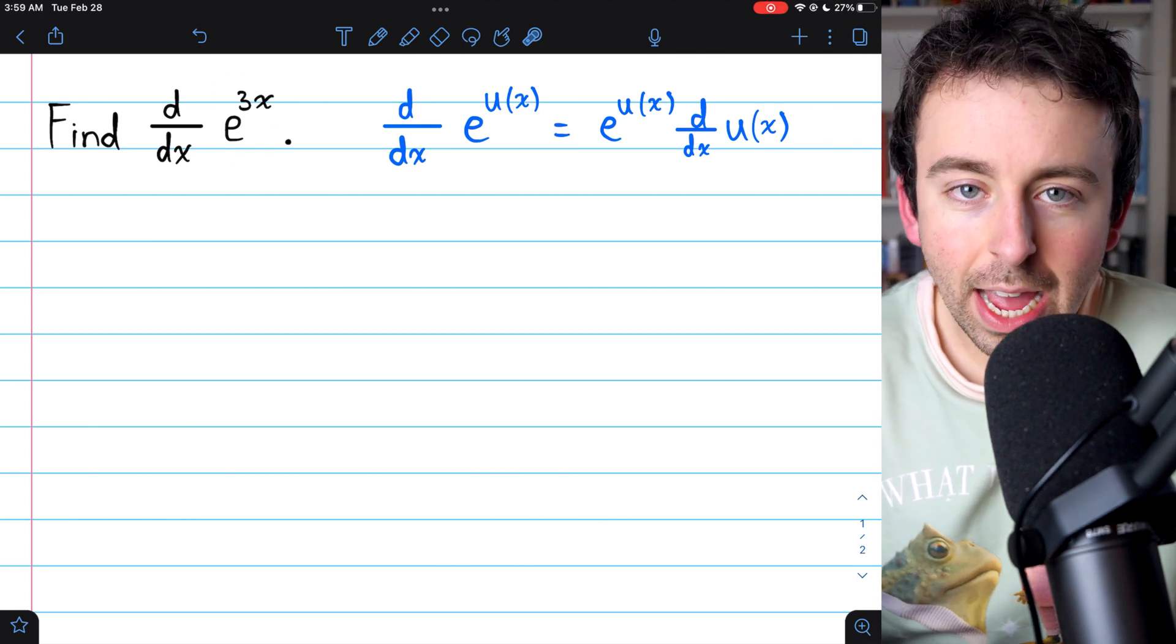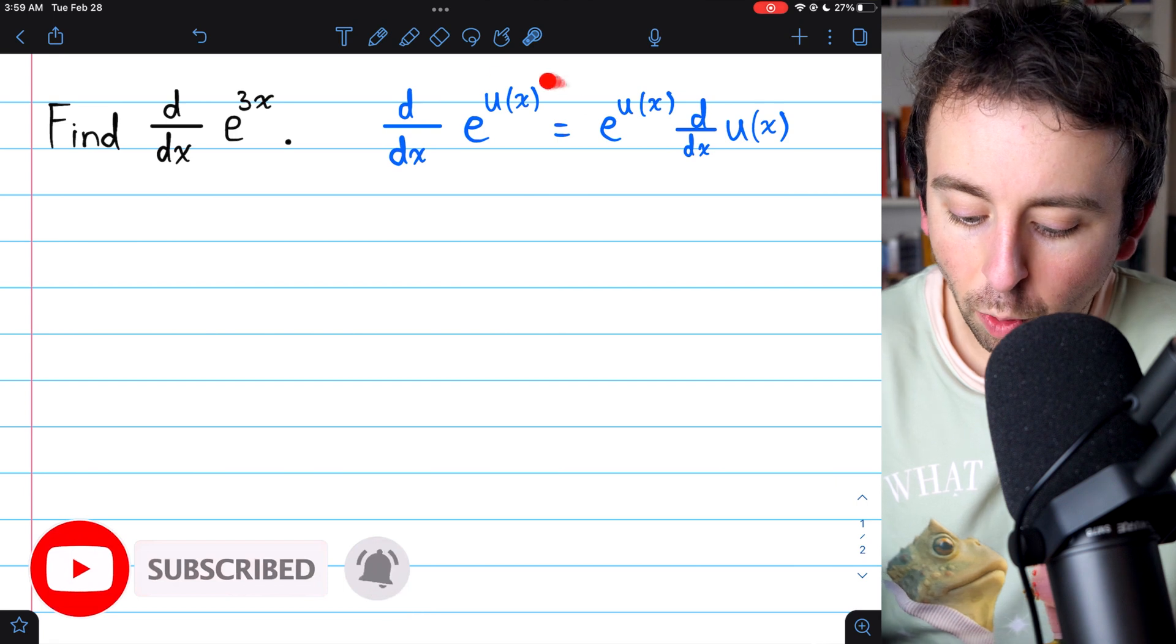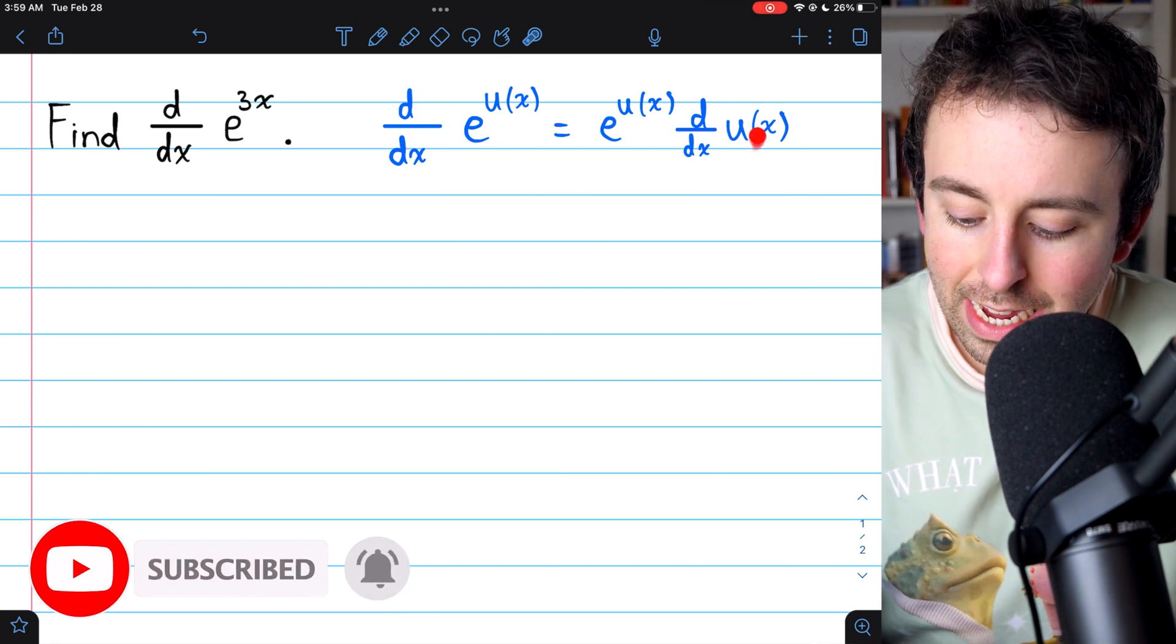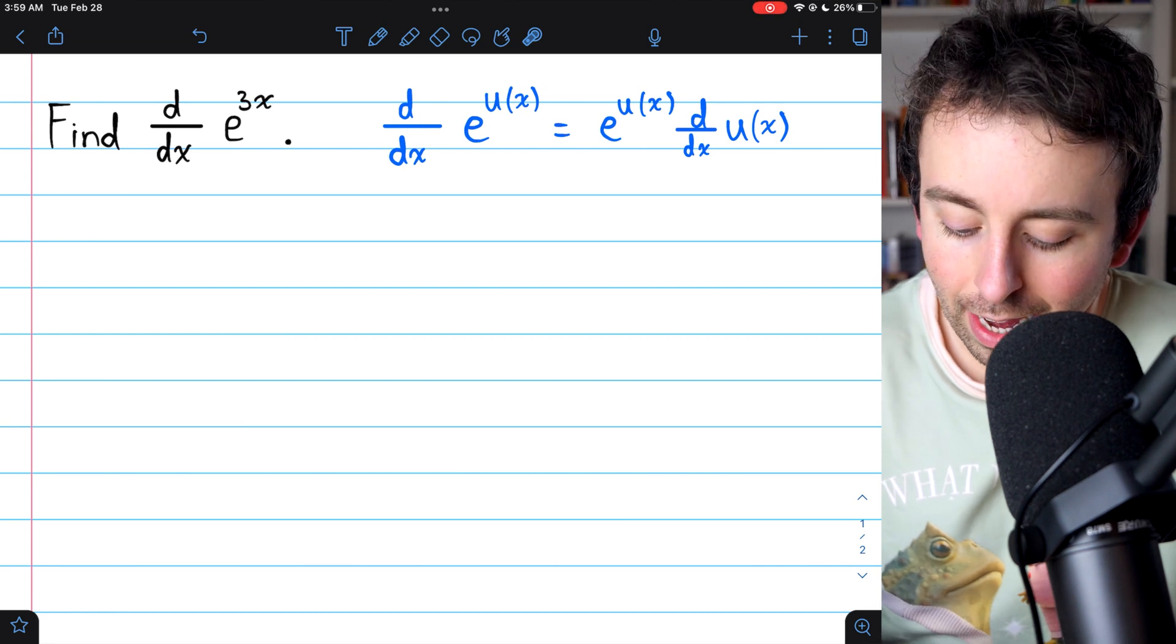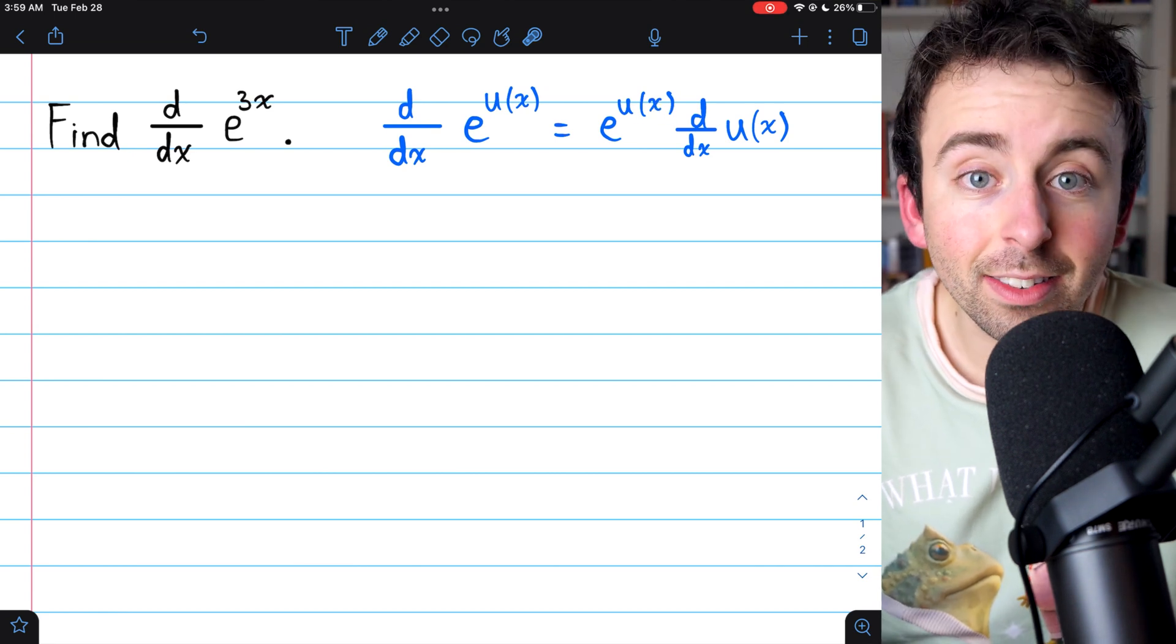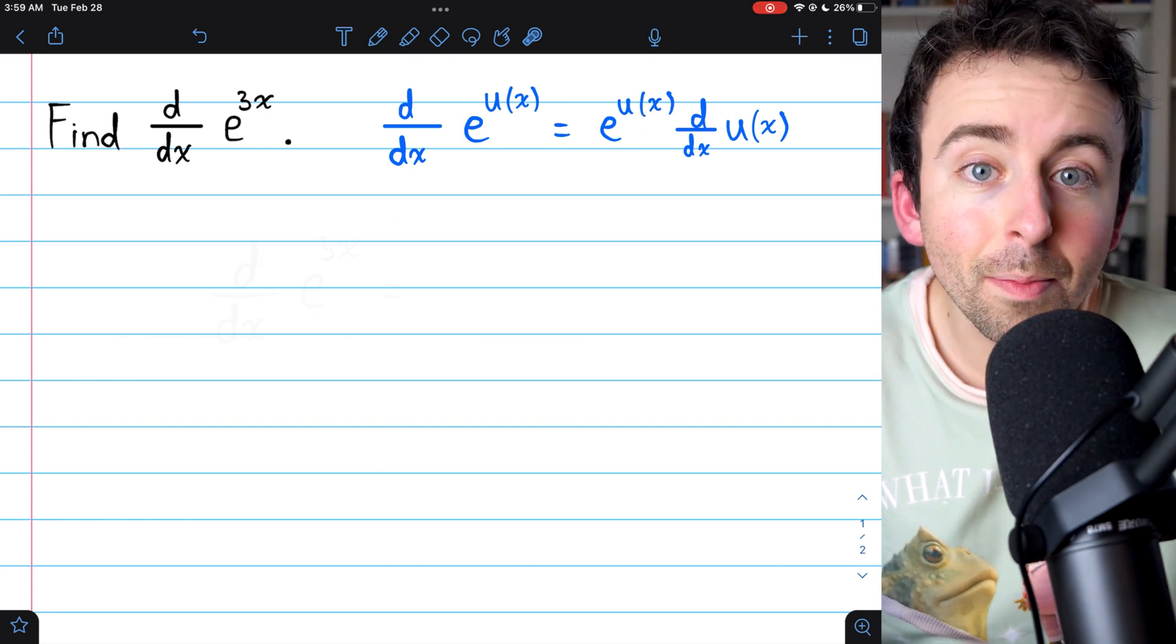To find the derivative of e to the 3x, we simply need to use the chain rule. I've written the general formula for the derivative of e to some function here in blue. All you have to do is take e to that function, that stays the same, and then multiply that by the derivative of that function that's in the power.